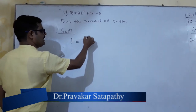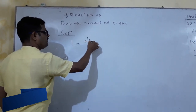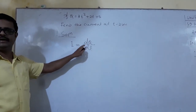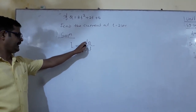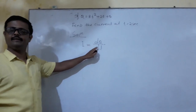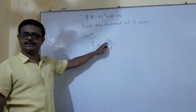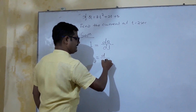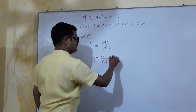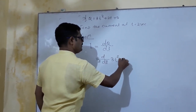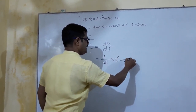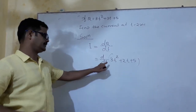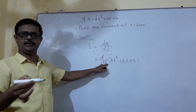We will find dq by dt. So dq by dt is the derivative of q. Q is given in the expression, so we take d by dt of 3t-squared plus 2t plus 5.